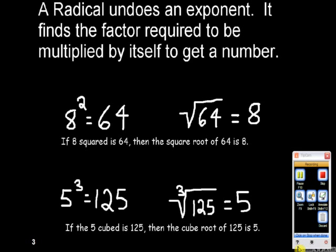A radical undoes an exponent. It finds the factor required to be multiplied by itself to get a number. If 8 squared is 64, then the square root of 64 is 8. If 5 to the third power is 125, then the cube root of 125 is 5.